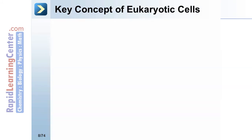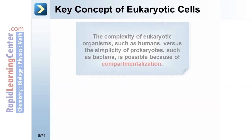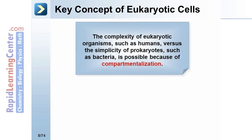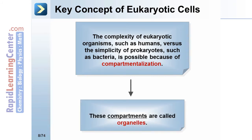Key concept — eukaryotic cells: The complexity of eukaryotic organisms, such as humans, versus the simplicity of prokaryotes, such as bacteria, is possible because of compartmentalization. These compartments are called organelles.